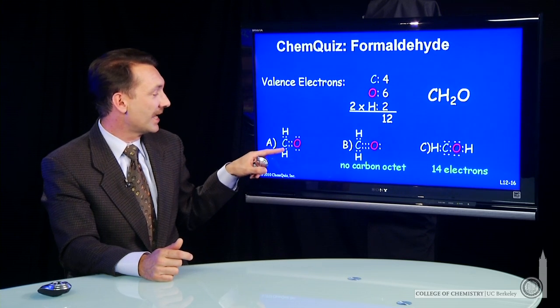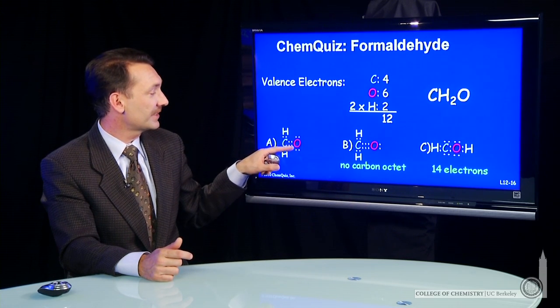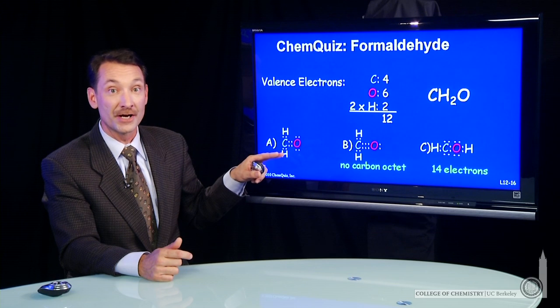Our first structure, A, has 2, 4, 6, 8, 10, 12 electrons, the right number, and carbon has 2, 4, 6, 8, an octet.